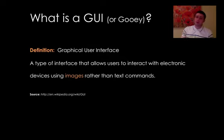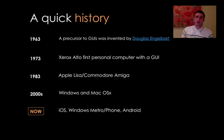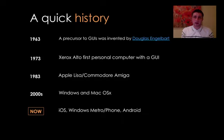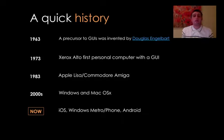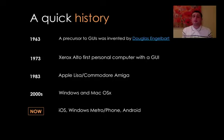This comes from the all-knowing source of Wikipedia. To give you a brief history: in 1963, the precursor to GUI, which was very desktop-like, was invented by a guy called Douglas Engelbart — the same guy who made the first mouse. In 1973, it was taken by Xerox Alto and evolved into the first personal computer with a GUI. In 1983, it was released more commercially with Apple Lisa and Commodore Amiga. You might remember these from your childhood — or maybe not, and I'm showing my age.